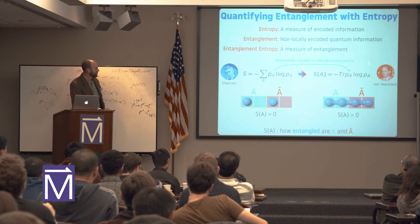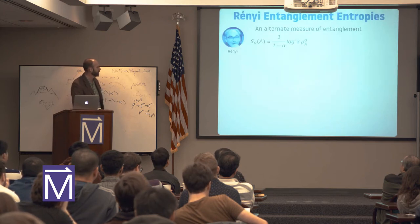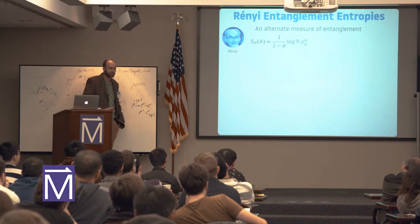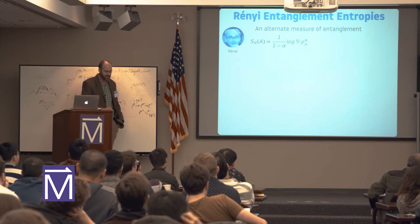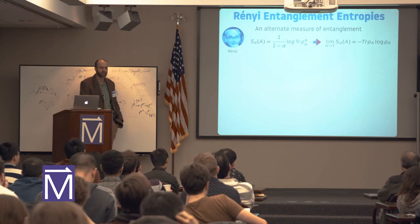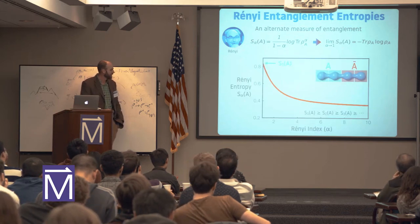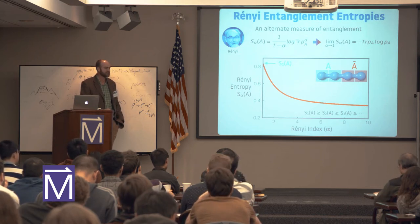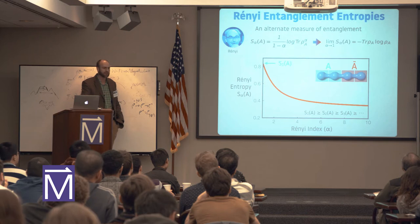The von Neumann entropy can be difficult to measure in various cases and experiments. The Rényi entropies are another class of entropies that behave similarly and obey some nice relationships. They simplify in the limit of the Rényi index alpha going to one, reproducing the usual von Neumann entropy. They have the nice relation that they're monotonically decreasing with the Rényi index — S1 is greater than S2 is greater than S3 — and they're equal for the maximally and minimally entangled states.